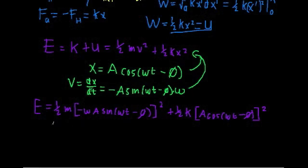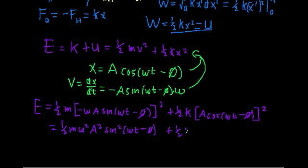Let's do out the squared. We get one-half m omega squared A squared sine squared omega t minus phi—the negative sign goes away when squared—plus one-half k A squared cosine squared omega t minus phi.